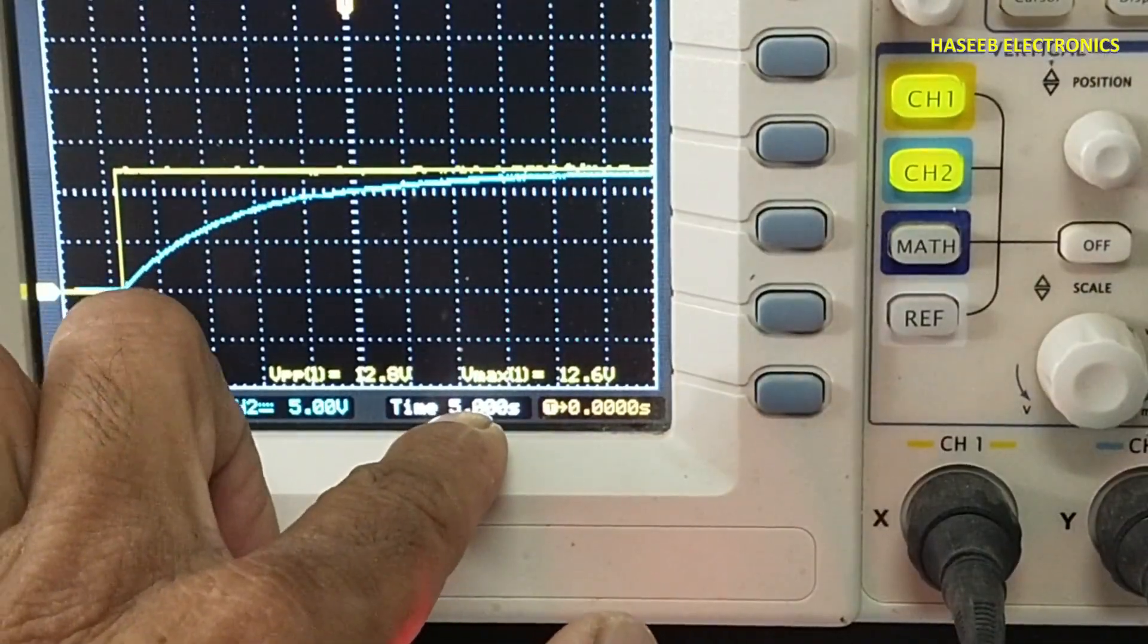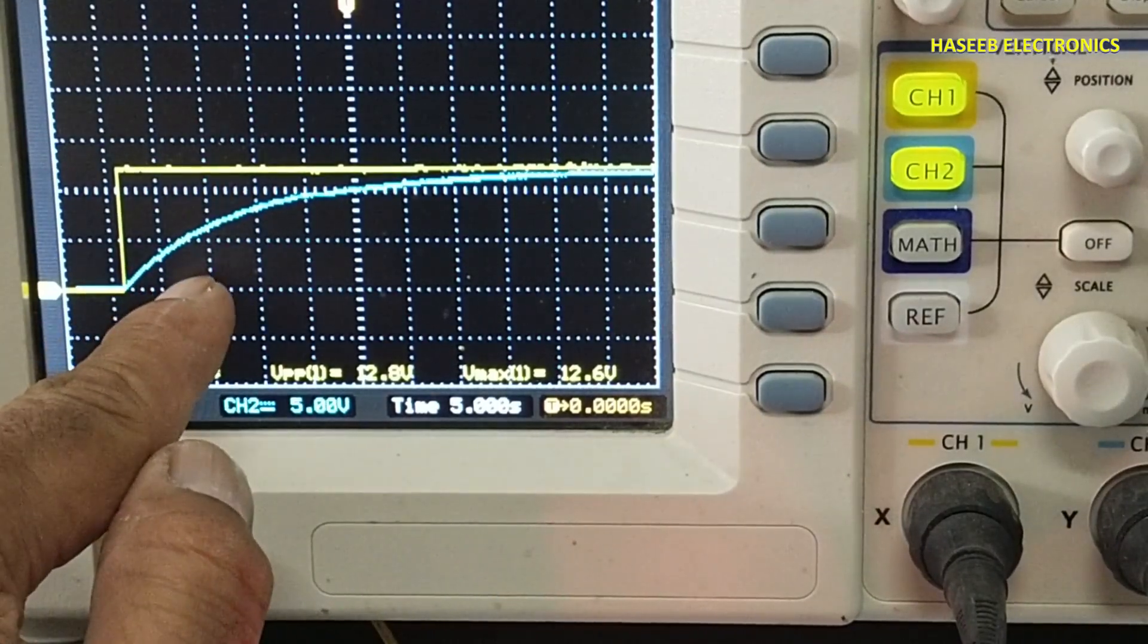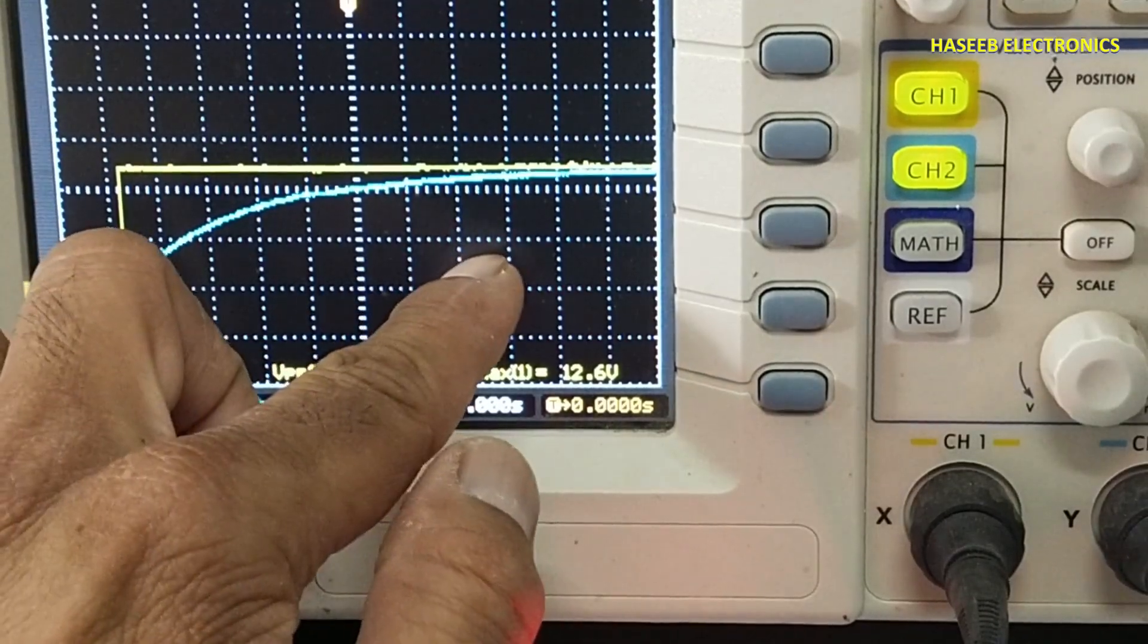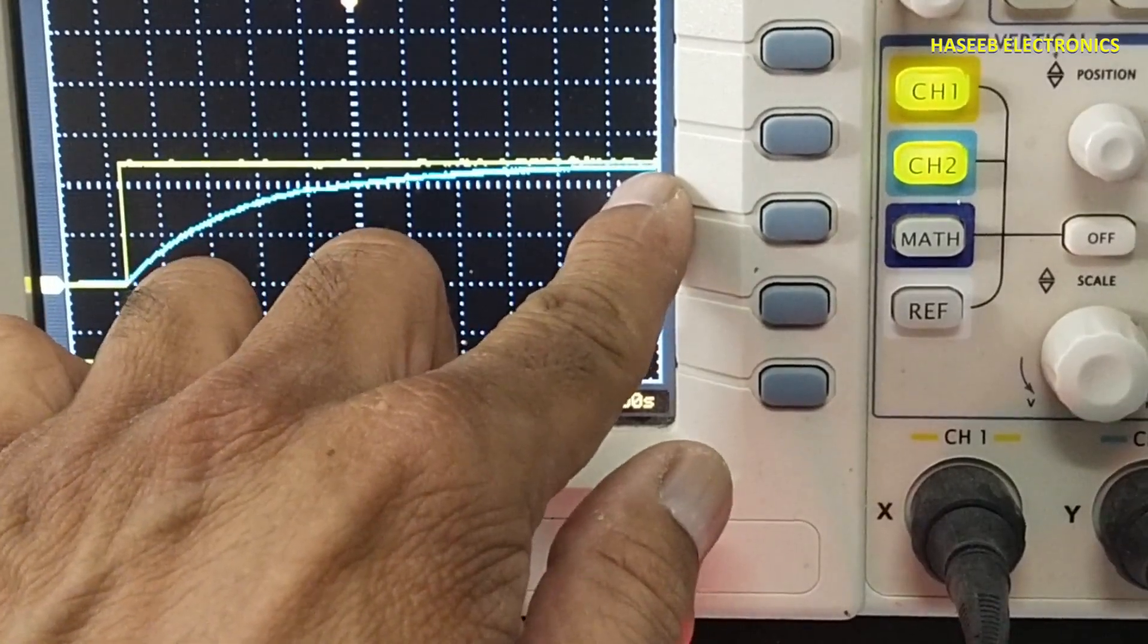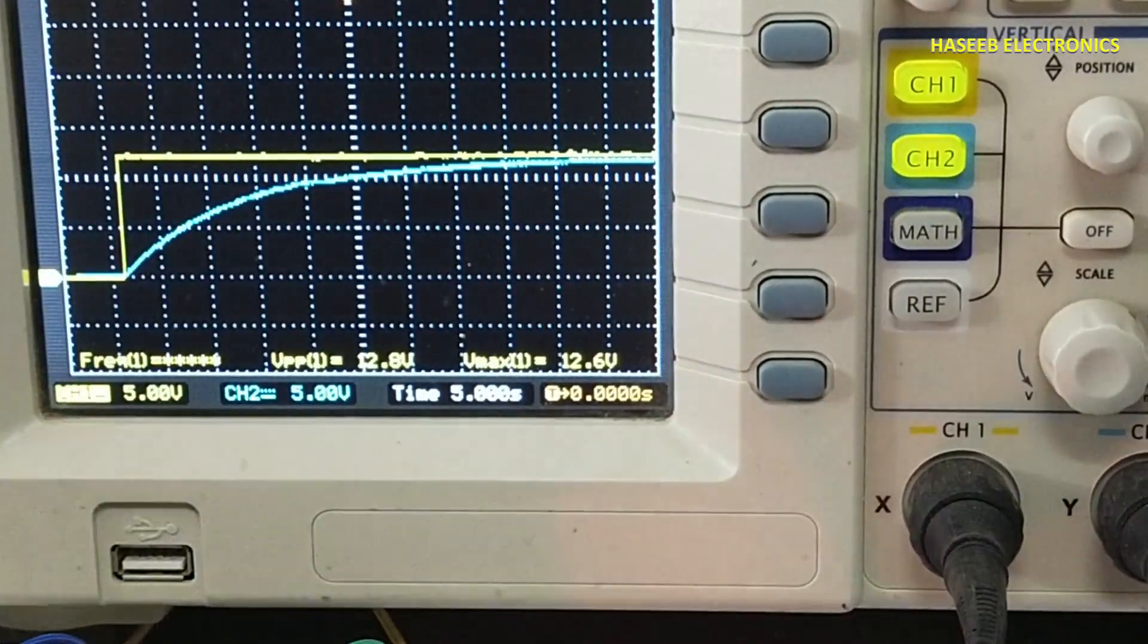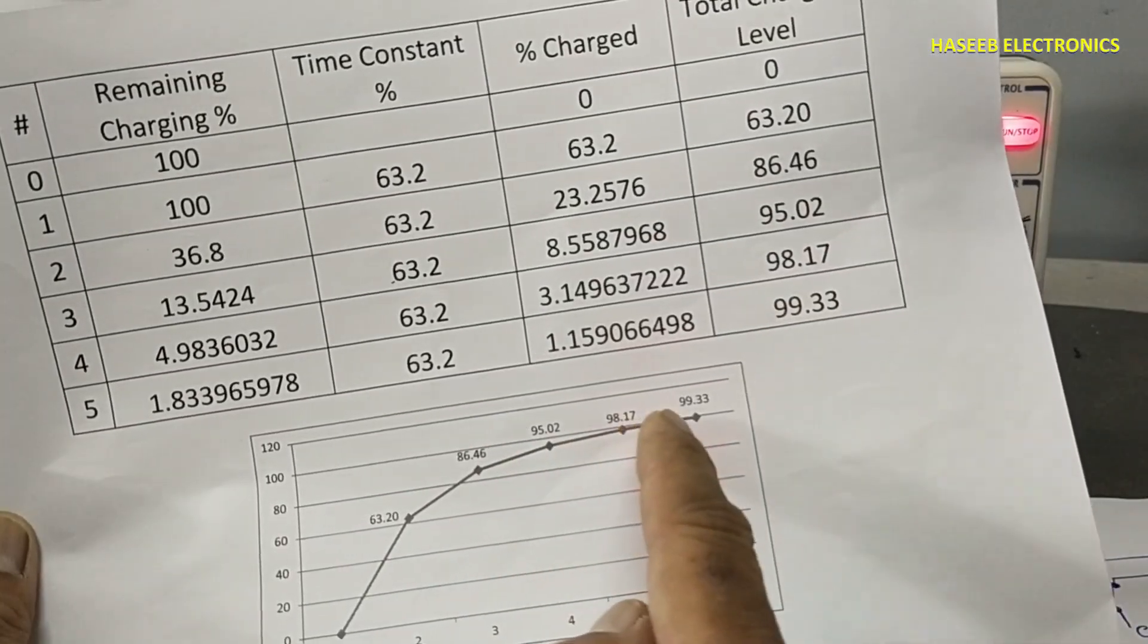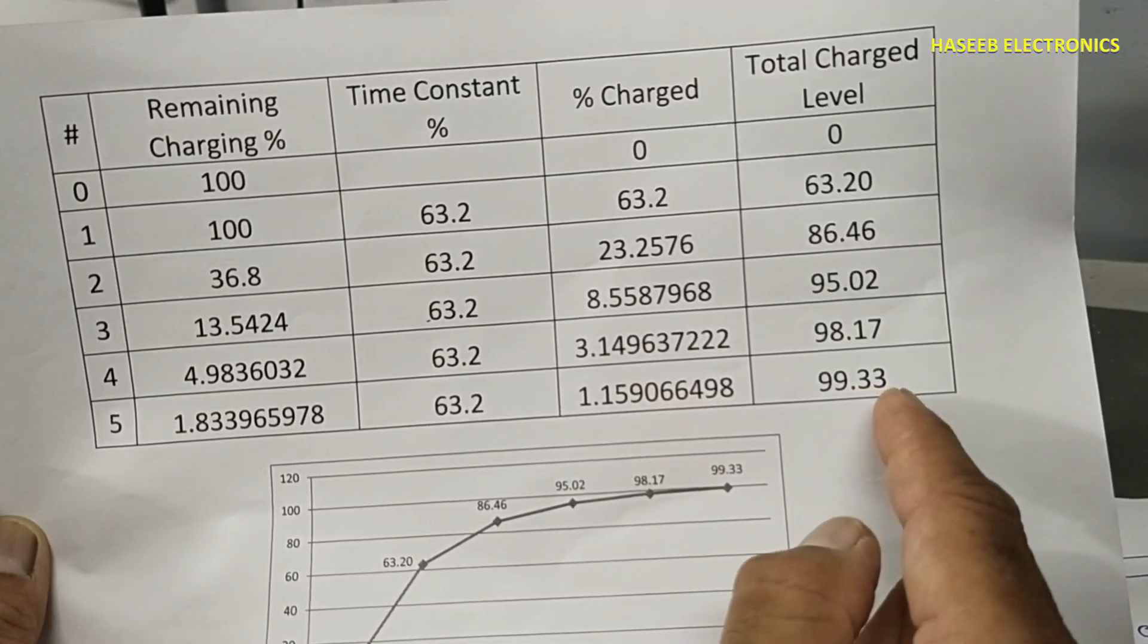Our time setting is five seconds per division. It is starting from here: one, two, three, four, five, six, seven, eight, nine, ten, eleven. At the 11th grid, the capacitor voltage is equal to supply voltage. As we discussed in our last video, after the fifth time constant it will reach around 99.33 percent.